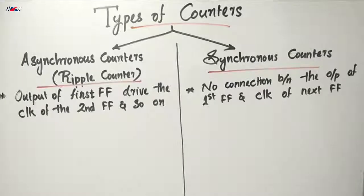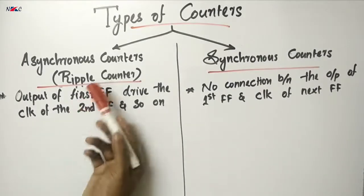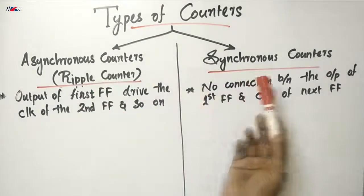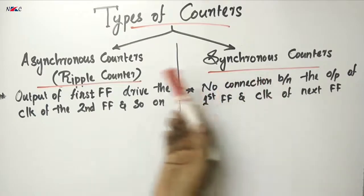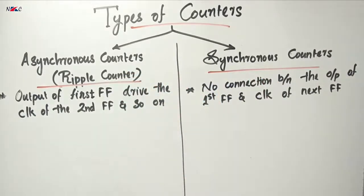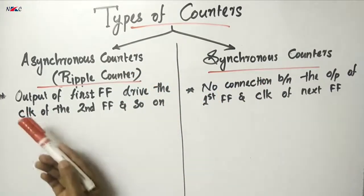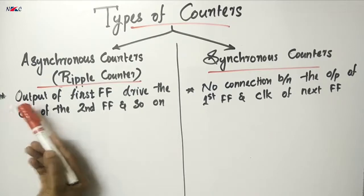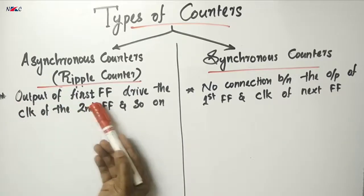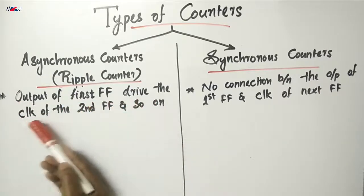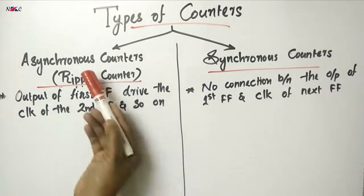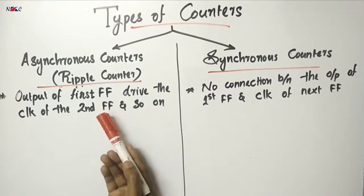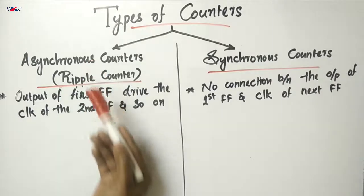Now let's see the differences between asynchronous counters and synchronous counters. In an asynchronous counter, the flip-flops are connected such that the output of the first flip-flop drives the clock of the second flip-flop, and so on.